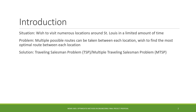The problem is that there are multiple possible combinations to take when planning out a route between each location. To solve this, a Traveling Salesman Problem will be used to determine the optimal route around the city during their stay.